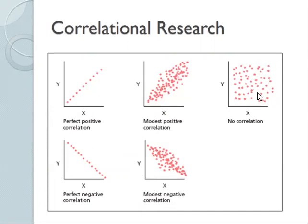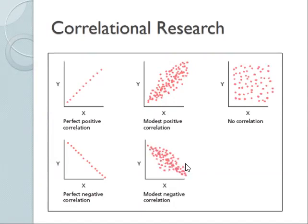This is what it would look like if there were no correlation between the variables. A negative correlation means that as one variable increases, the other decreases. A perfect negative correlation would be minus one, while a very strong negative correlation in the social sciences would be maybe minus 0.7 or minus 0.65.